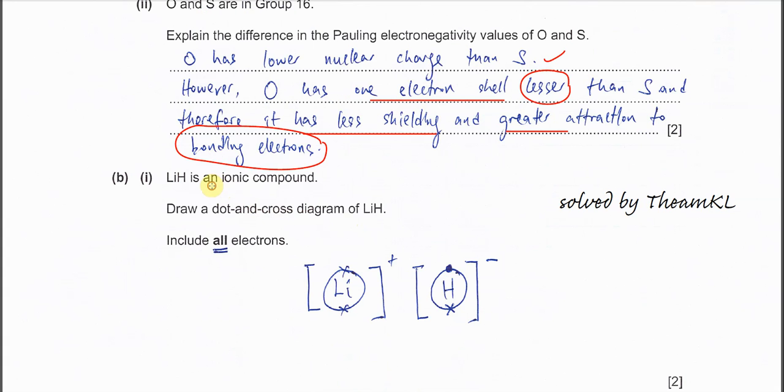Part B: Lithium hydride is an ionic compound. Draw a dot-cross diagram of LiH including all electrons. Even the inner electrons must be shown. Lithium's valence electron is donated to hydrogen - use crosses for lithium, dots for hydrogen. Lithium has one electron shell remaining (1s²), so show these two electrons. Include the charges (positive and negative) and square brackets for both species.